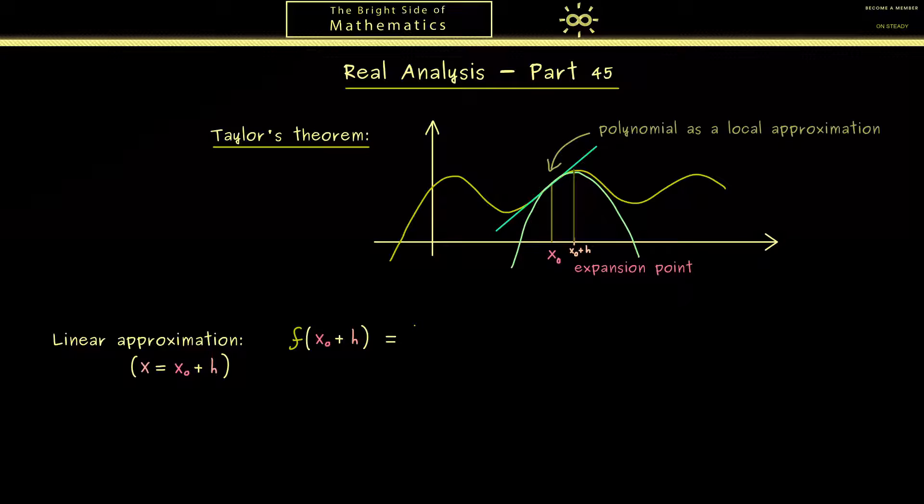Now what we find by the definition of the derivative is that f of x0 plus h is given by f of x0 plus f prime of x0 times h plus a remainder term r of h times h. Now here when you compare to our original definition of the derivative you see that h now plays the role of x minus x0. Hence in this formulation the linear term here is easy to recognize.